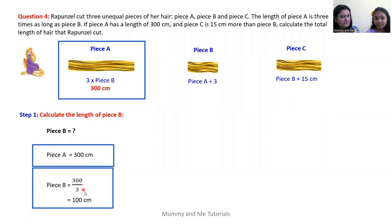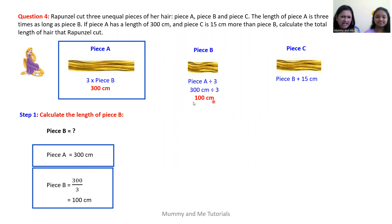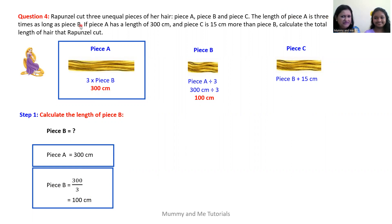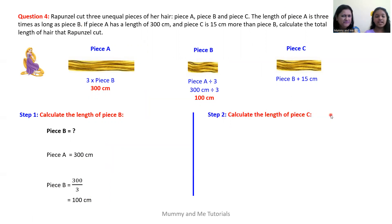Piece A equals 300 centimeters, so piece B equals 300 divided by three, which is 100 centimeters. That makes sense because 100 centimeters multiplied by three gives us 300 centimeters, confirming that piece A is three times the length of piece B.